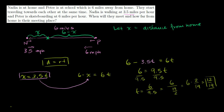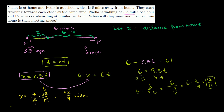To find how far from home they meet, x = 3.5 × (12/19). Writing 3.5 as 7/2: x = (7/2) × (12/19). Simplifying by dividing numerator and denominator by 2 gives 7 × 6 = 42 over 19 miles. So in 12/19 of an hour, they will meet exactly 42/19 miles from home — a little over 2 miles from home.